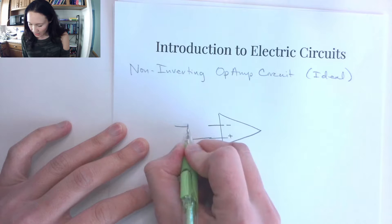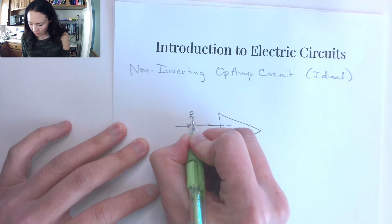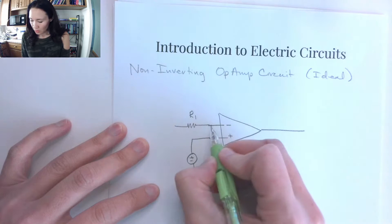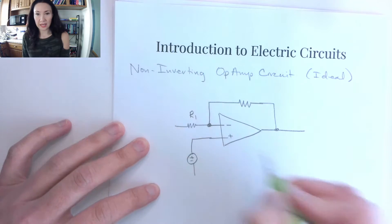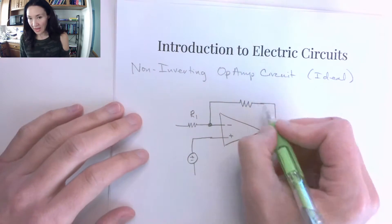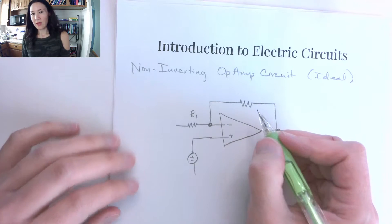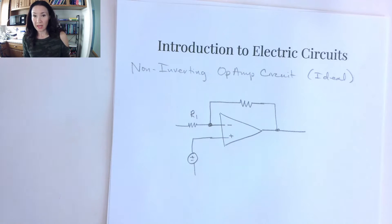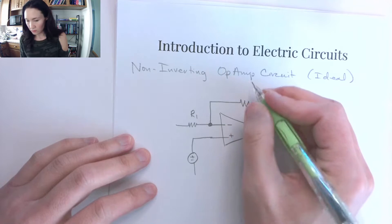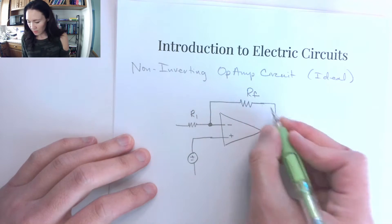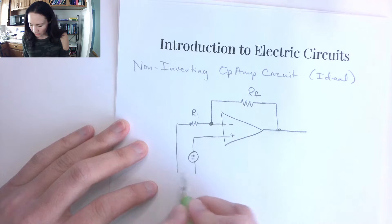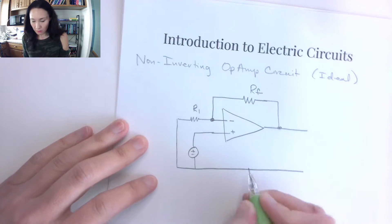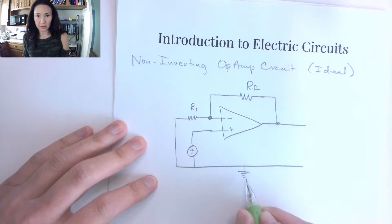Suppose we have an input resistor here — I'll call this R1. Almost all op-amp circuits are going to have a negative feedback loop. If we have a negative feedback loop, we're no longer going to use the open-loop gain; we're going to use the closed-loop gain. This is the feedback resistor, and this bottom line here is our ground wire.